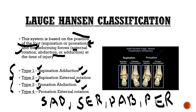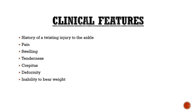The AO classification is not very clinically useful; it is mainly for documentation purposes. Clinical features include a history of twisting injury in 99% of cases, pain, significant swelling, tenderness, crepitus, deformity, and inability to bear weight.